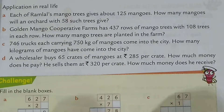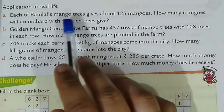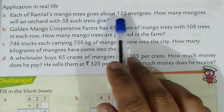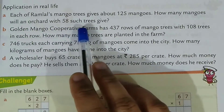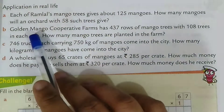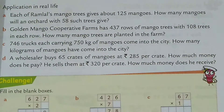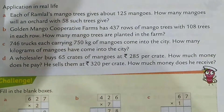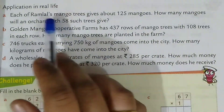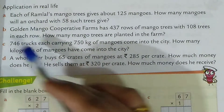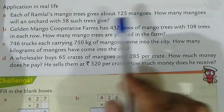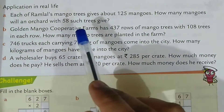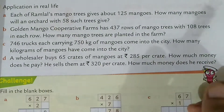So the first question is: each of Ramla's mango tree gives about 125 mangoes. How many mangoes will an orchard with 58 such trees give? An orchard is where there are many trees of mangoes and other fruits. So here, in Ramla's orchard, one tree has 125 mangoes, and there are 58 trees. So the total number of mangoes will be?